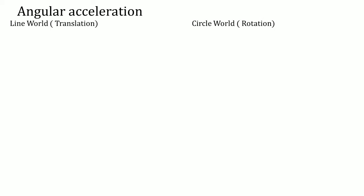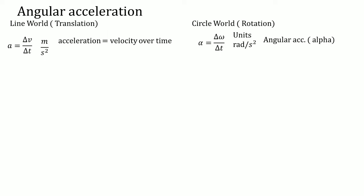Welcome. This is part two of rotational kinematics. We're going to start with angular acceleration. Angular acceleration in the linear world can be defined by change in velocity over the change in time. The unit is meters per second squared. The corresponding circular world rotation for acceleration is going to be called alpha — it looks like the letter A but with an extra squish. This is called alpha.